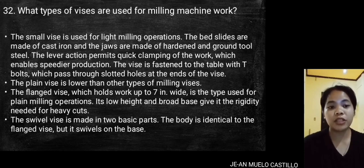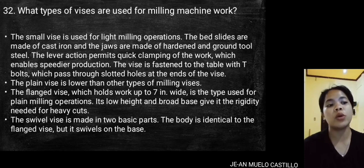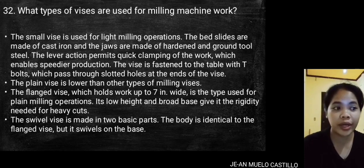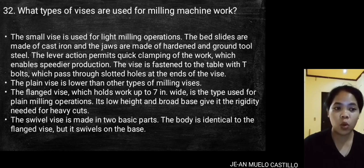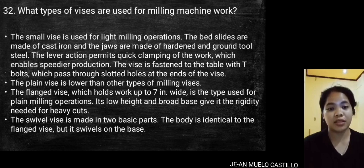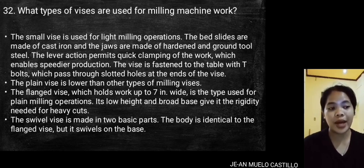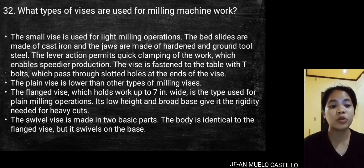The plain vice is lower than other types of milling vices. The flange vice, which holds work up to 7 inches wide, is used for plain milling operations — its low height and broad base give it the rigidity needed for heavy cuts. The swivel vice is made in two basic parts: the body, which is identical to the flange vice, and the base on which it swivels.